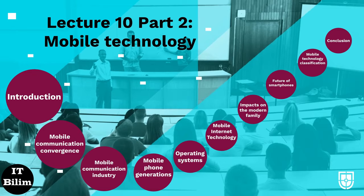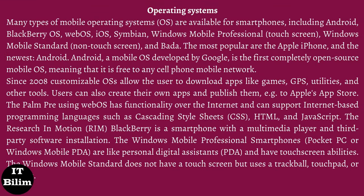Many types of mobile operating systems are available for smartphones, including Android, Blackberry OS, webOS, iOS, Symbian, Windows Mobile Professional (Touchscreen), Windows Mobile Standard (Non-Touchscreen), and Bada. The most popular are the Apple iPhone and the newest Android. Android, a mobile OS developed by Google, is the first completely open-source mobile OS, meaning that it is free to any cell phone mobile network. Since 2008, customizable OS allows the user to download apps like games, GPS, utilities, and other tools.